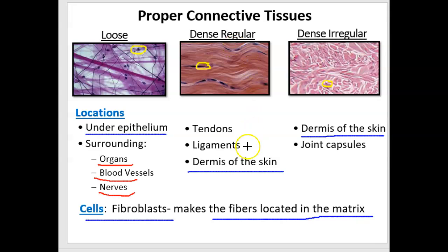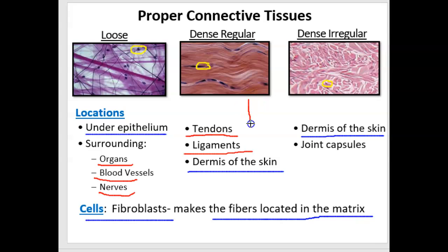Dense regular connective tissue is very strong, and it's found in tendons and ligaments. Dense irregular is also strong, but it's usually not found in linear structures. Tendons and ligaments are very linear — they're connecting muscle and bone, or bone and bone. Dense irregular will be surrounding an organ, like forming a joint capsule around a joint to keep the ends of the bones isolated, or the meninges, which is a round membrane made up of dense irregular connective tissue.